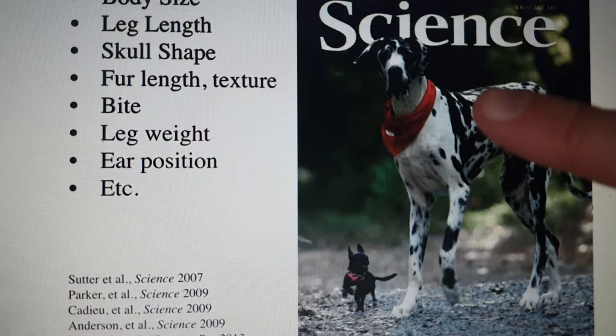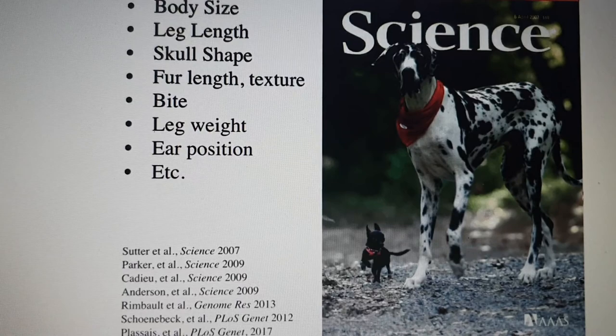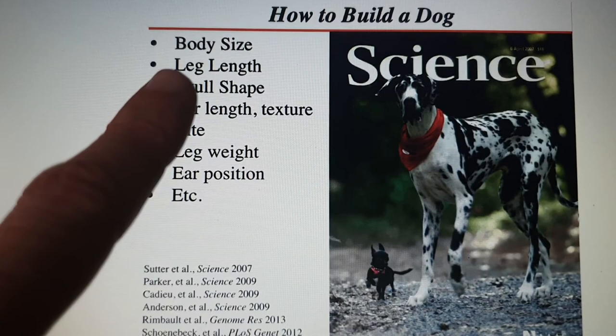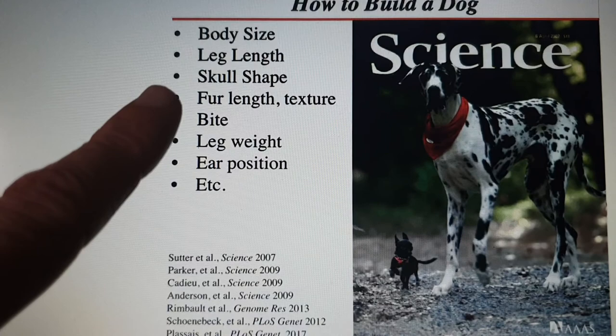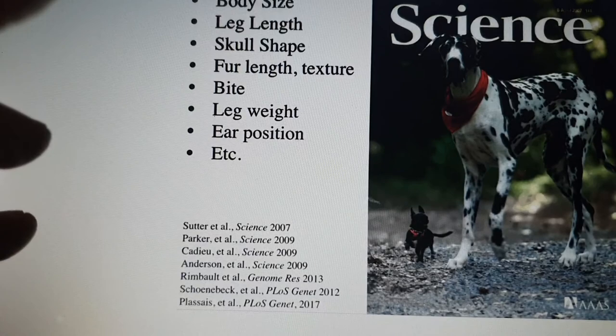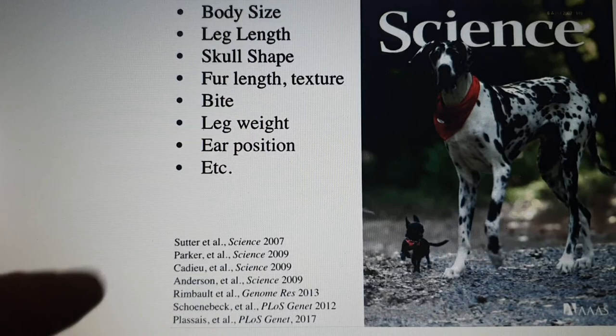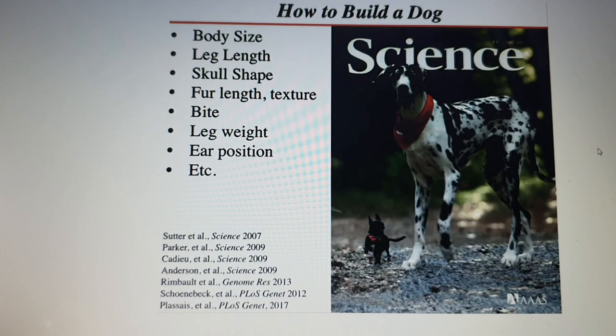Looking at breed diversity published in Science: here is a Great Dane in harlequin color next to an all-black Chihuahua — one species, both descended from wolves, yet so different. The measurable traits depicted include body size, leg length, skull shape, bite force, fur length and texture, leg bone density — very thin as in the Great Dane or dense — and ear position: erect as in the Chihuahua or dropped as in the Great Dane.